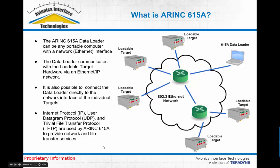The diagram here gives a basic overview of what a network would look like. A portable data loader can be any kind of portable computer that has an Ethernet LAN interface that can connect to a standard 802.3 network, which would also have the aircraft systems and loadable targets connected to it. The data loader communicates using Ethernet, and on top of that IP and UDP, and also utilizes the Trivial File Transfer Protocol. So all standard internet networking LAN protocols are used by the 615A protocol — think of it as sitting on top of these standard protocols.